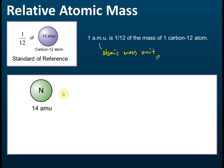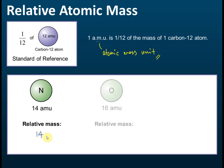For example, a nitrogen atom has a mass of 14 amu, so its relative atomic mass is 14. This is because 14 amu is 14 times the standard reference of 1 amu. Similarly, oxygen has a mass of 16 amu, so its relative atomic mass is 16, since 16 amu is 16 times greater than the standard reference of 1 amu.